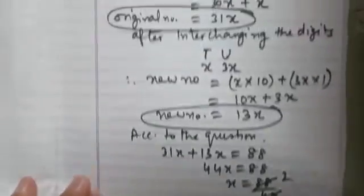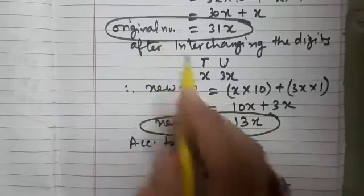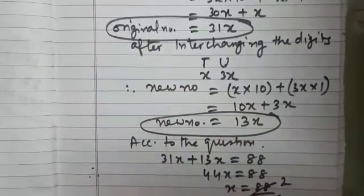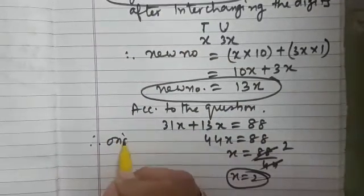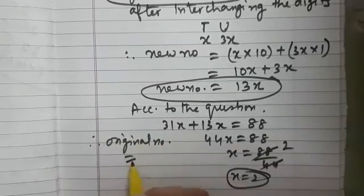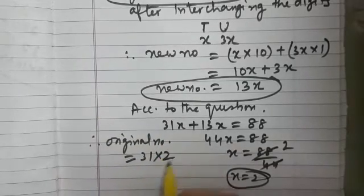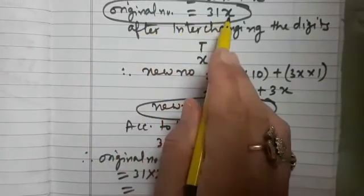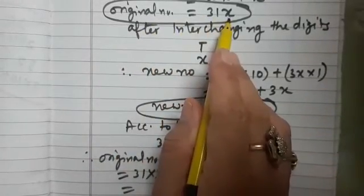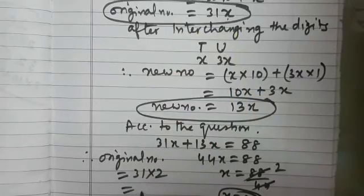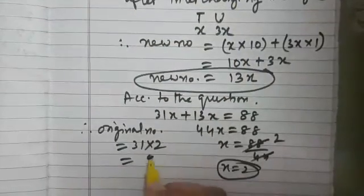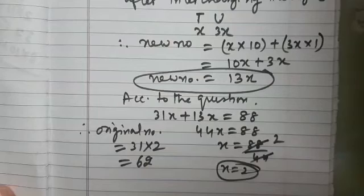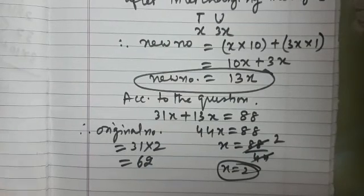So can you now tell me what will be the original number? Therefore, original number will be equal to 31 into 2. Observe here, original number was 31x and the value of x is 2. So 31 into 2, we get 62. I hope it is clear to you.